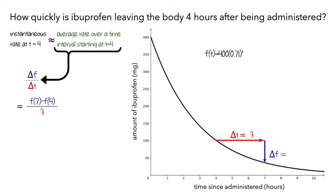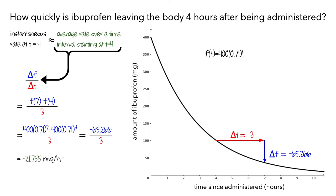Since we have a formula for f, we can evaluate the function at t equals 7 and t equals 4, compute the difference, and divide. This gives us an average rate of –21.755 mg per hour. This computation would give us an accurate measure of the rate of change if the rate was constant over the 3 hour time interval. However, this isn't the case, so this isn't a very precise approximation of the instantaneous rate of change.